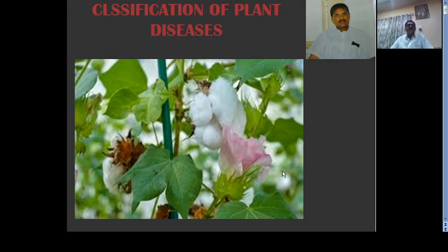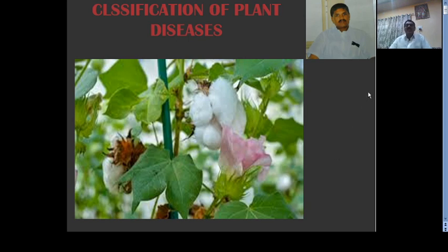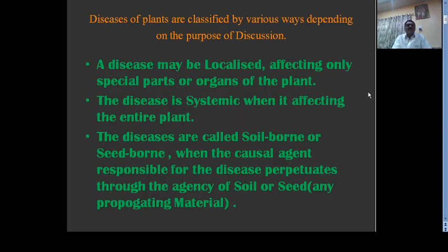Good morning students. Today we will discuss the classification of plant diseases. Diseases are caused by fungi, bacteria, viruses, mycoplasma, and higher plants. Depending on their living nature, these are classified as animate and inanimate. Animate pathogens are responsible for the development of disease, while inanimate consists of environmental factors which cause diseases to crop plants.